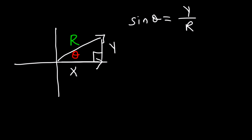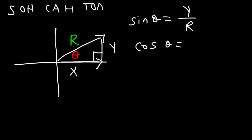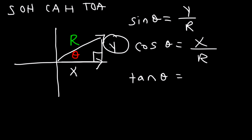But when you're not dealing with a unit circle, sine theta is actually y over r — it's equal to the opposite side divided by the hypotenuse. Cosine theta, according to SOH-CAH-TOA, is equal to the adjacent side divided by the hypotenuse. The adjacent side is x and the hypotenuse is r. Tangent theta is equal to the opposite side divided by the adjacent side, so it's y divided by x.